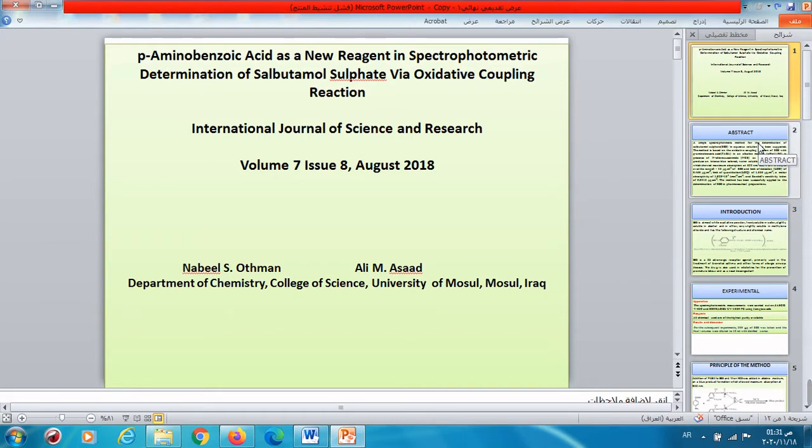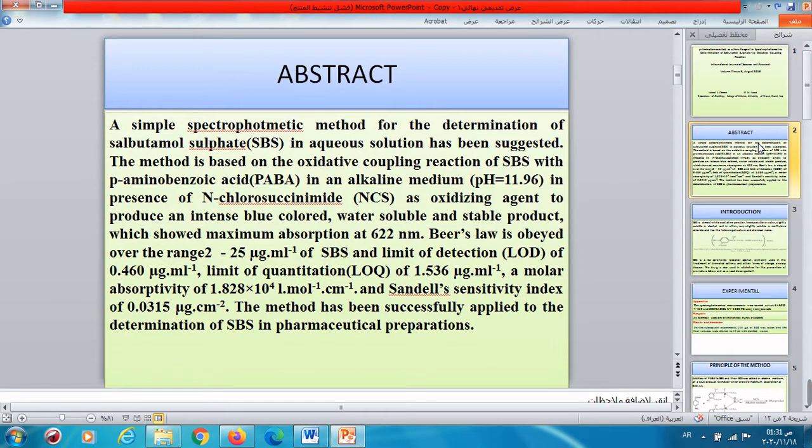Abstract. A simple spectrophotometric method for the determination of salbutamol sulfate in aqueous solutions has been suggested. The method is based on the oxidative coupling reactions of salbutamol sulfate with para-aminobenzoic acid in an alkaline medium in presence of the oxidant N-chlorosuccinimide. The blue-colored product was water-soluble and stable, which showed maximum absorption at 622 nanometers. Beer's law is obeyed over the range 2 to 25 microgram per ml of salbutamol sulfate. LOD, LOQ, molar absorptivity and Sandell's sensitivity index have been calculated.